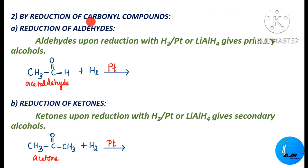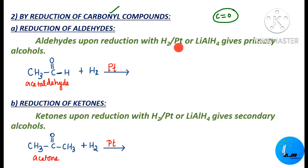The next methodology is by reduction of carbonyl compounds. Carbonyl compounds are compounds having C=O. The first one is reduction of aldehyde: when an aldehyde is reduced with hydrogen in the presence of platinum or lithium aluminium hydride (LiAlH4), it gives the primary alcohol.